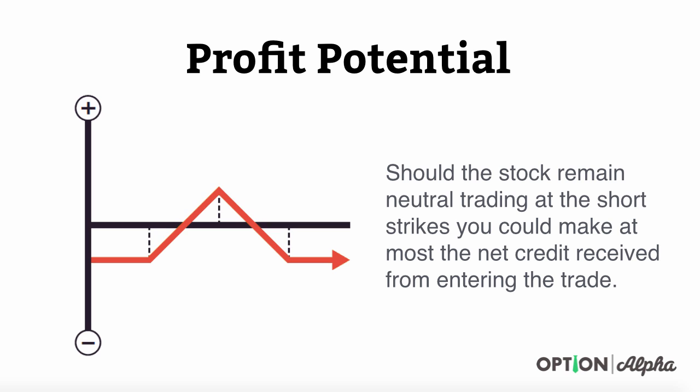Profit potential on these trades: should the stock remain neutral, trading at the short strikes, you could make at most the net credit received from entering the trade. That's the ideal situation — the peak of the profit/loss diagram shown on the screen. In most cases, what we're going to try to do is close out this trade a little bit early and take a profit that's not exactly a full profit, but as soon as the stock sees a drop in implied volatility, we should get a nice little profit that starts to materialize.